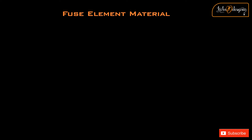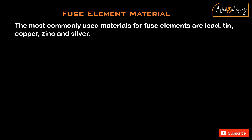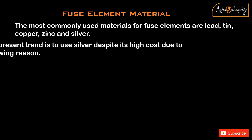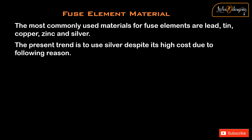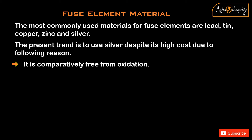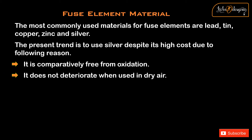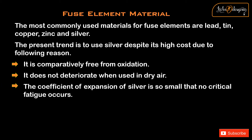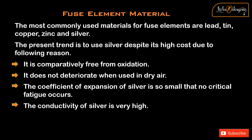Fuse Element Material. The most commonly used materials for fuse elements are lead, tin, copper, zinc, and silver. The present trend is to use silver despite its high cost for the following reasons: it is comparatively free from oxidation, it does not deteriorate when used in dry air, the coefficient of expansion of silver is so small that no critical fatigue occurs, and the conductivity of silver is very high.